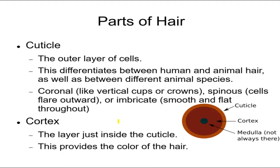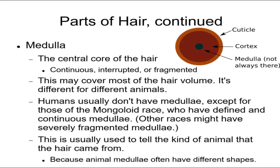There's the cortex — that's the part that gives the hair its color. You can use this to differentiate between someone who's blonde-haired and black-haired. The medulla is the middle part. There are three kinds of medulla. One is where it's continuous — in a cross-section of hair, the medulla shows up as a nice line. Sometimes it's broken apart — that's interrupted. And sometimes you have tiny pieces here and there — that's fragmented. Continuous is a straight line throughout, interrupted is broken apart, and fragmented is tiny pieces here and there.